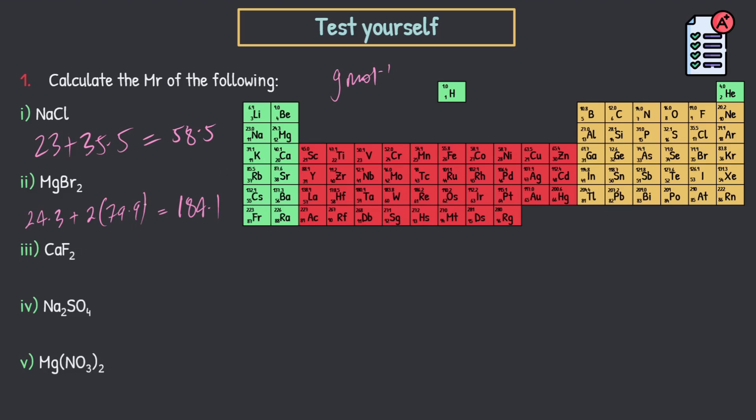Now, this one here, 40.1 plus two lots of fluorine or fluoride, 19. So two lots of that guy equals 78.1. Next one. Question four, sodium sulfate. So we've got two of these guys. So that's two lots of 23 plus sulfur, group six, 32.1 plus four lots of oxygen. Again, group six. That's going to be four lots of 16 equals 142.1.